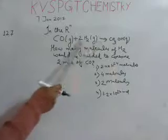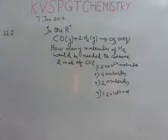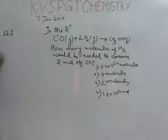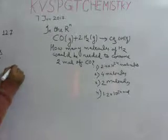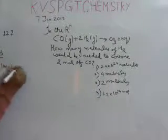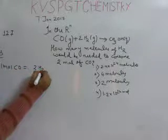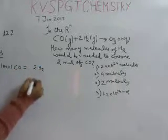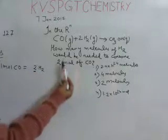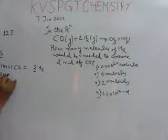Friends, see how to solve this question. In the given reaction, one mole of carbon monoxide is consumed by two moles of hydrogen. See, two moles. And what is asked in the question? Two moles of carbon monoxide. So if there are two moles of carbon monoxide, then how many moles of hydrogen is required? Four moles.